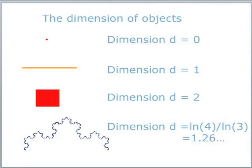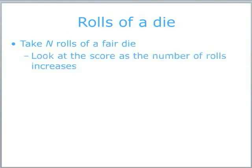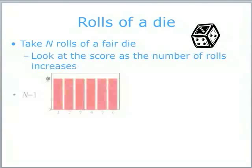The other idea I'm going to need to connect those three topics is some basic probability, and the best way to illustrate that is a simple game — just rolling a dice. If you take a dice, roll it a number of times, and look at the cumulative score that you get. It's a fair dice, and so the numbers one to six come up with equal probability, and what this shows is the frequency of those occurrences.